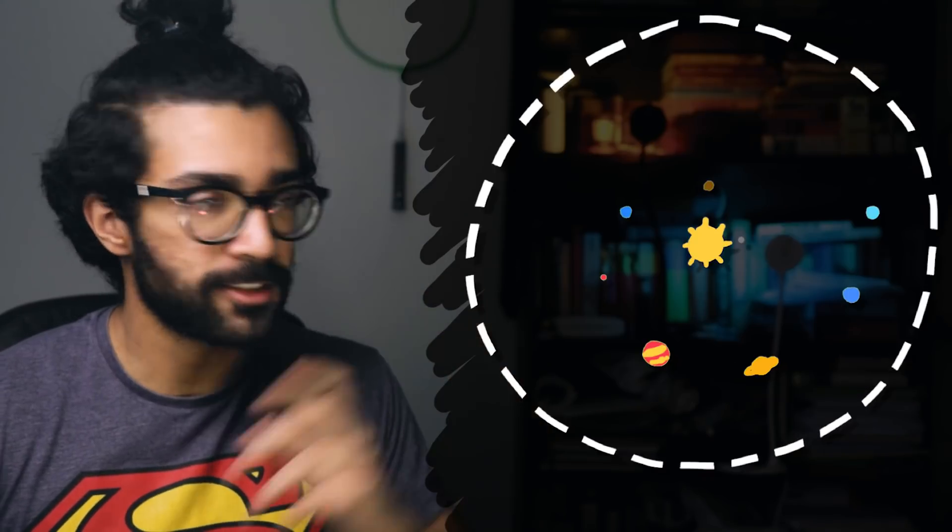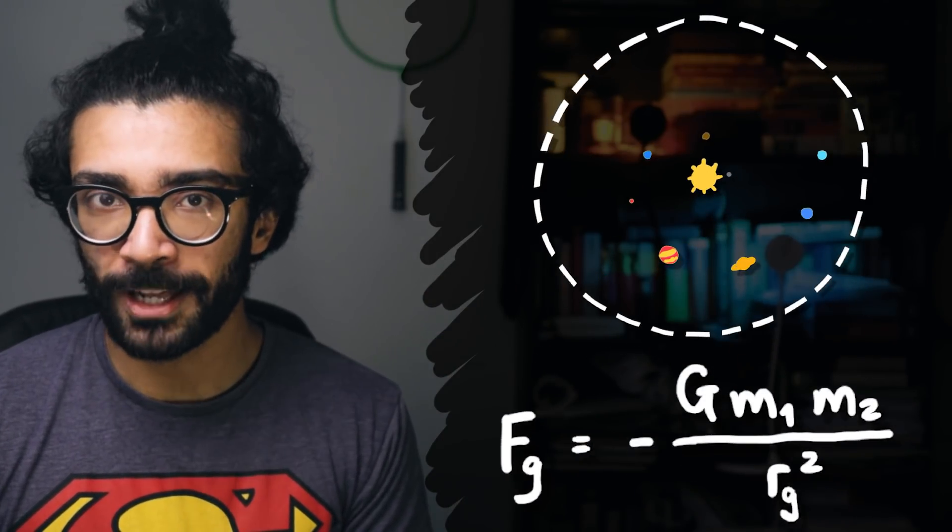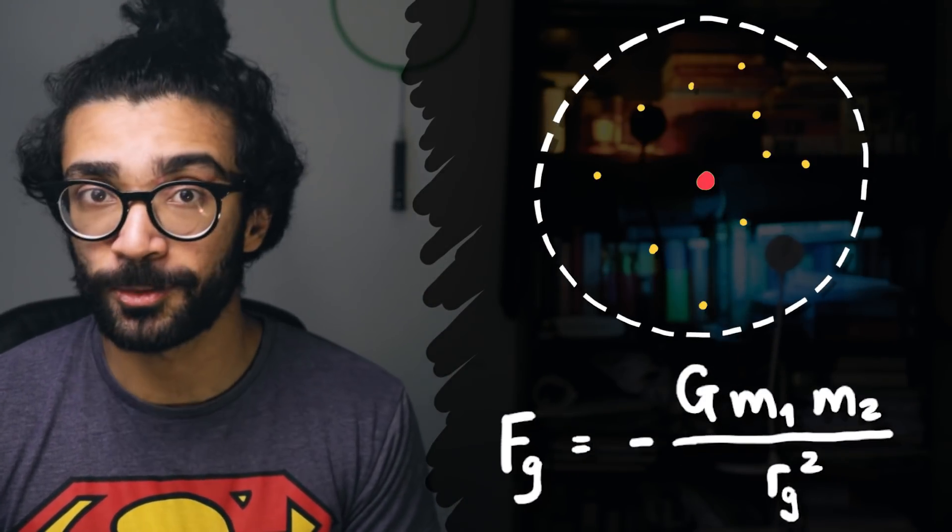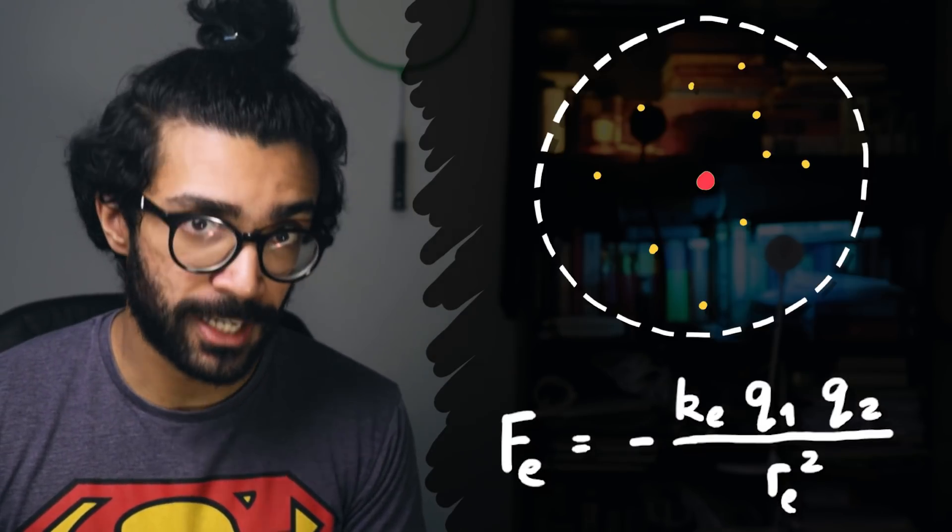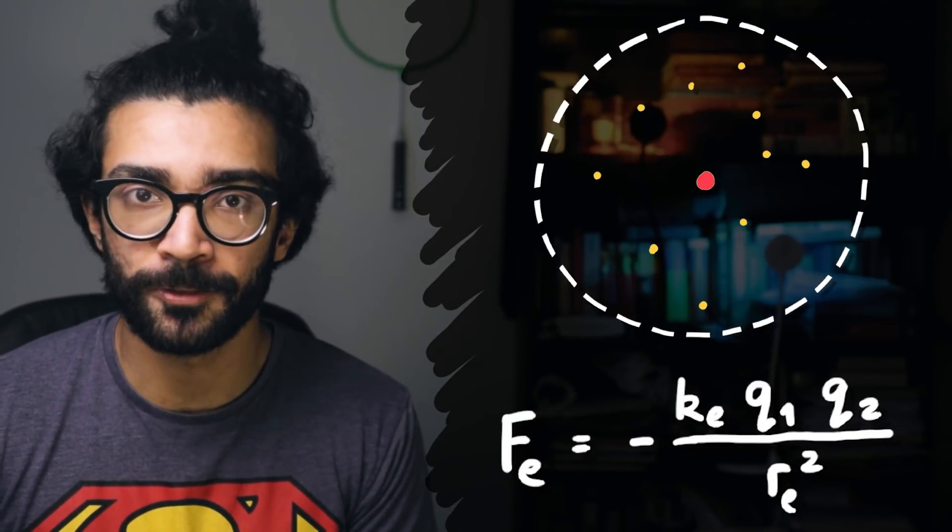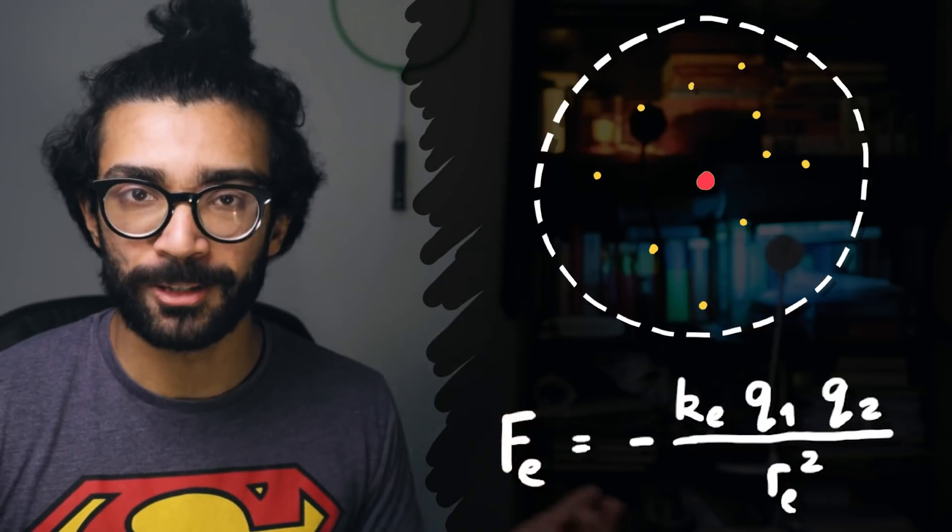It's essentially like going, take the solar system, shrink it, replace the sun with the nucleus, replace the planets with electrons, consider the electrostatic force rather than the gravitational force, and voila, you have a brilliant model of the atom.